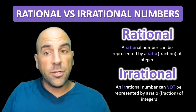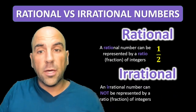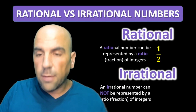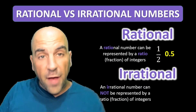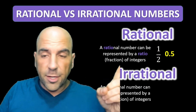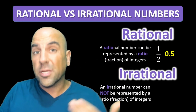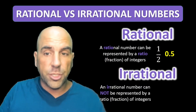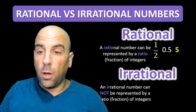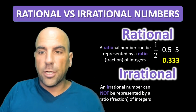Examples of each? One half — one is an integer, two is an integer, it can be a ratio. 0.5? It's the same thing as one half, so it can be represented as a ratio. Five? Five over one — it can be represented as a ratio.